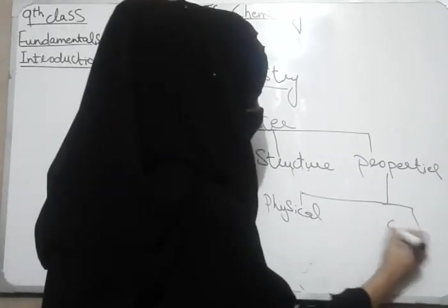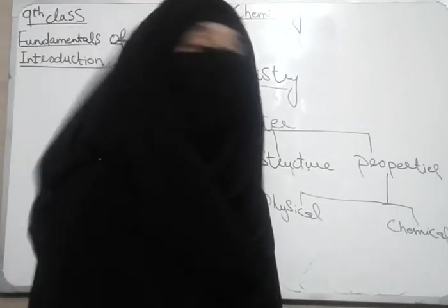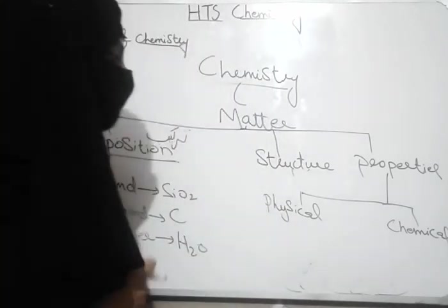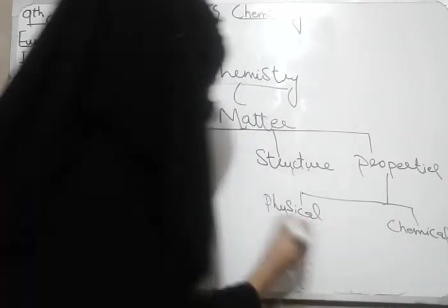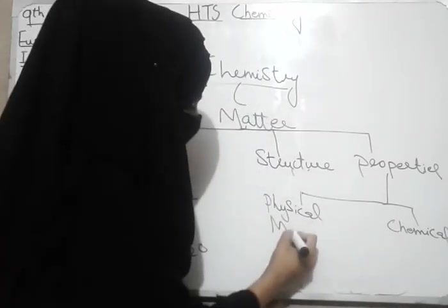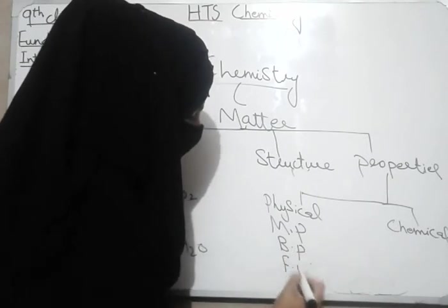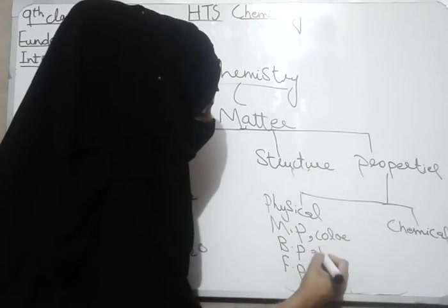In chemistry, we also study physical and chemical properties. Physical properties describe the physical appearance of matter. For example, if you look at water, you can study its melting point, boiling point, freezing point, color, and density.